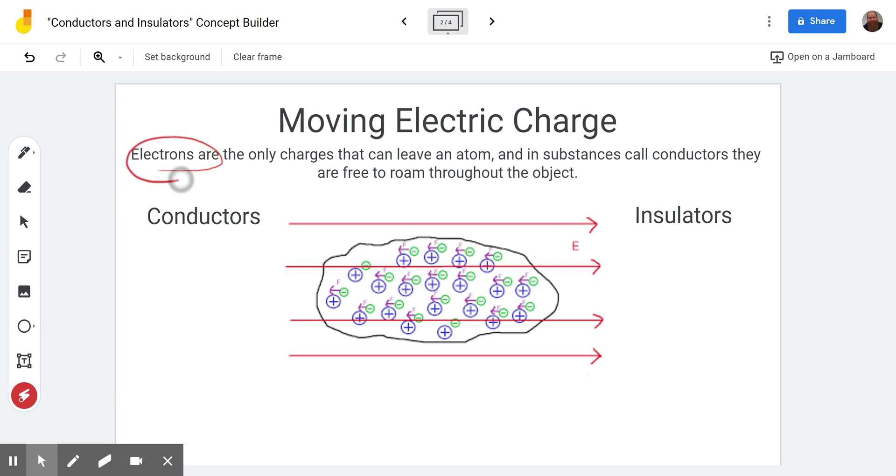In substances called conductors, electrons are free to roam throughout the object. Now you can see in our little diagram here every nucleus is represented with a plus, and then the outermost electron, you could say a valence electron, is here in green.